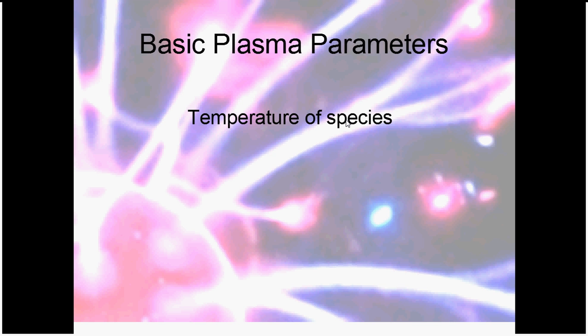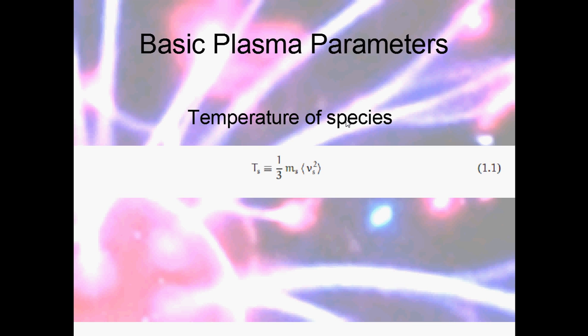The first thing we're going to talk about is the temperature of the species within a plasma. This is an extremely important concept and it comes from a group of particles all moving at different speeds in different directions. We're trying to capture a single feature about them. When we look at this, we define the temperature as equal to a third of the mass of the species times the ensemble average velocity of the species squared.